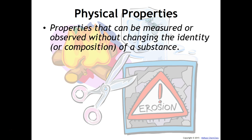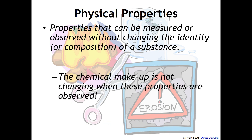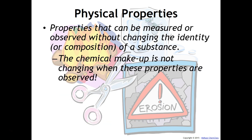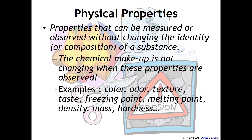Physical properties are properties that can be measured or observed without changing the identity or composition of a substance. The chemical makeup is not changing when these properties are observed. For example, something like color, odor, texture, taste, freezing point, melting point, density, mass, and hardness are all examples of physical properties — things we can observe without changing the identity or composition of the substance.